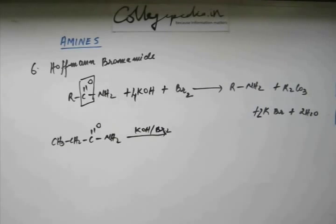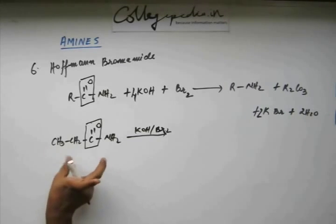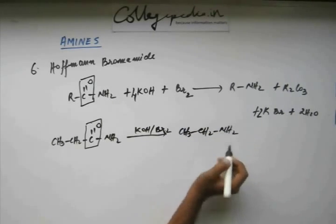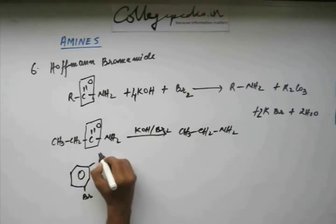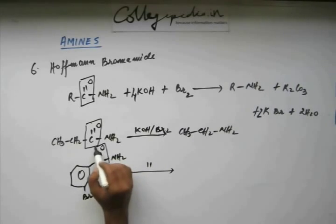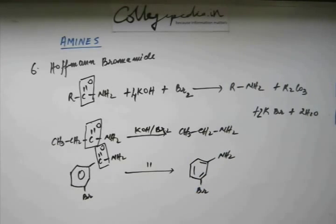Once you identify it as Hoffmann Bromamide, you know how to write the product: remove C=O and add NH₂ to the carbon, giving you ethanamine. Even if the R group is an aromatic ring, the reaction is still Hoffmann Bromamide with the same rule — just remove the C=O and convert the amide to an amine.